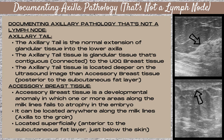The axillary tail is the normal extension of glandular tissue into the lower axilla. This tissue is contiguous with and connected to the upper outer quadrant breast tissue. It is located deeper on the ultrasound image than accessory breast tissue, posterior to the subcutaneous fat layer. On the ultrasound image you'll see the skin line, then fat, then glandular tissue connected to the upper outer quadrant of the breast.